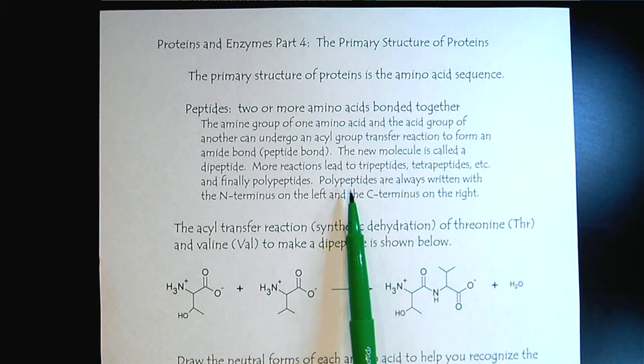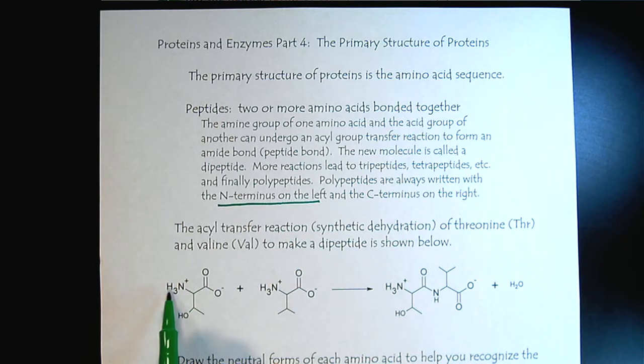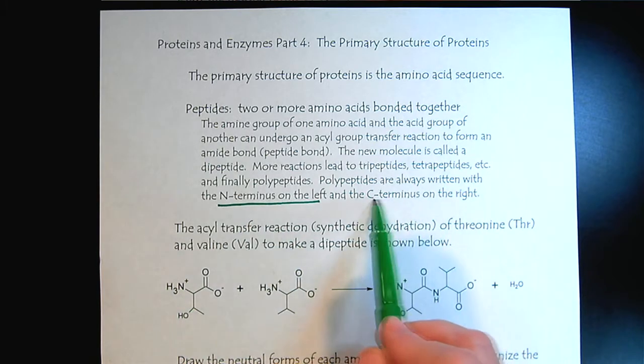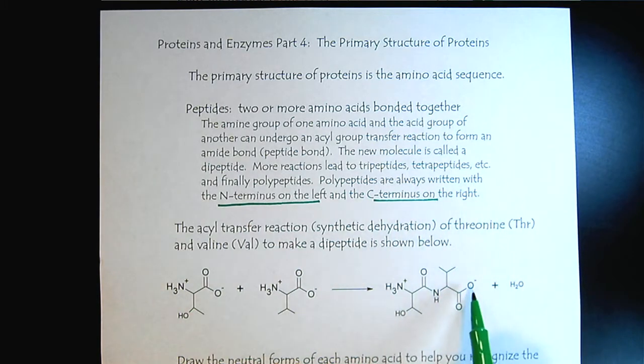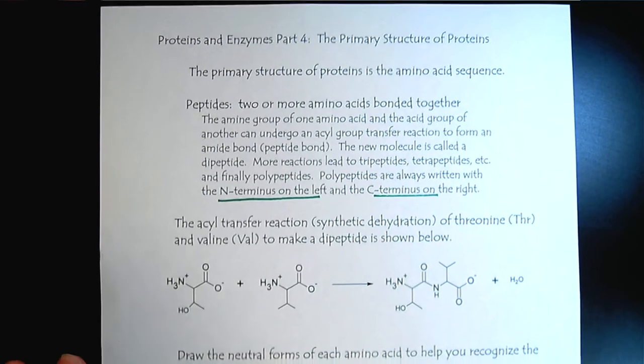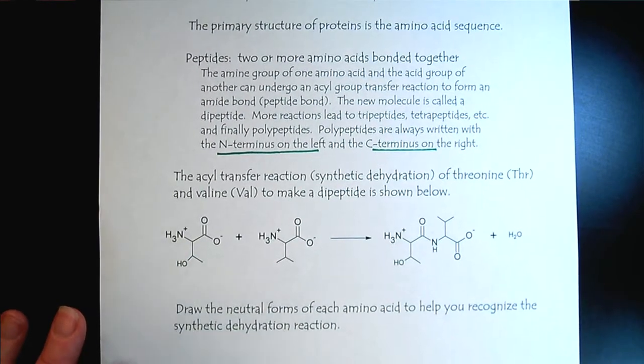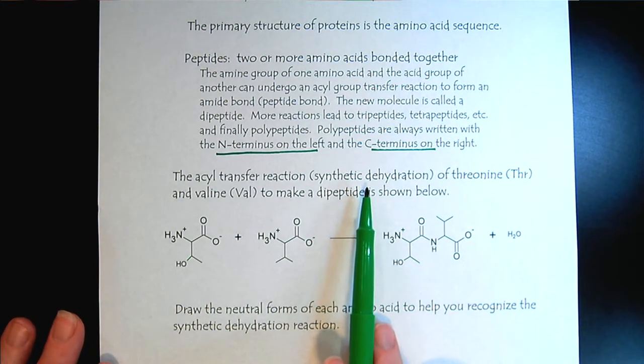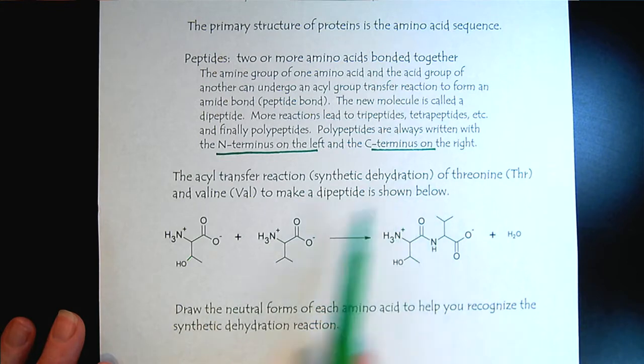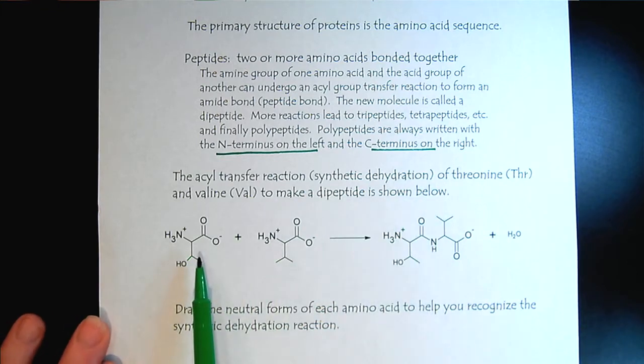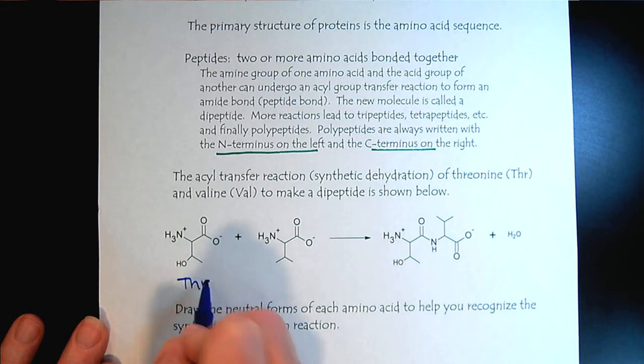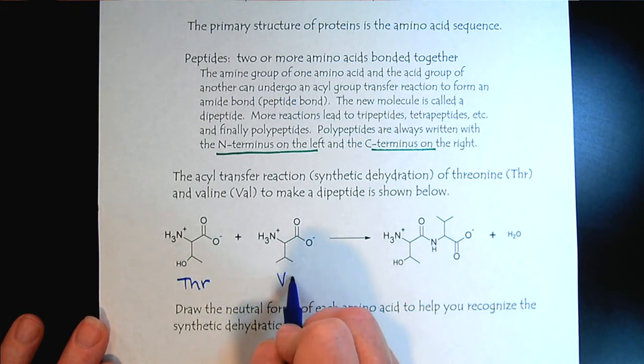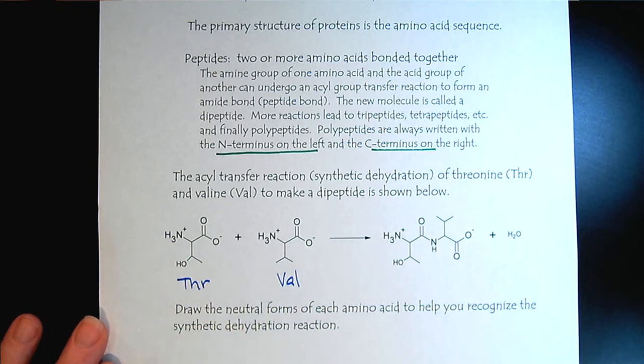When writing a polypeptide we're always going to write it with the N-terminus on the left and the C-terminus on the right. Here we have the acyl transfer reaction, which in biology they call synthetic dehydration. We have two amino acids here. The first is threonine and the second is valine, and they have three letter abbreviations.